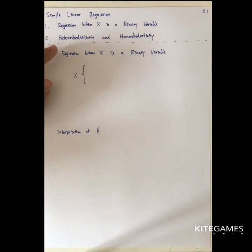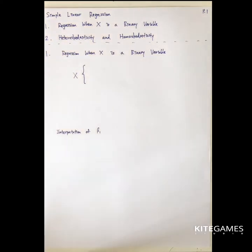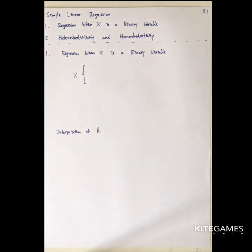We also talk about the concept of heteroscedasticity and homoscedasticity. Basically, the difference between them is that the conditional variance is constant in one case, and varies in the other. Given these different types of variance, you will need to use different estimators to estimate the population.